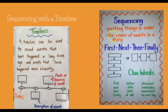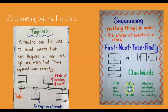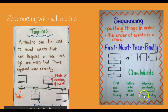Clue words that tell you the order of events in a story include: first, next, then, finally, before, after, later, at last, afterward, eventually, meanwhile, and in the next day.